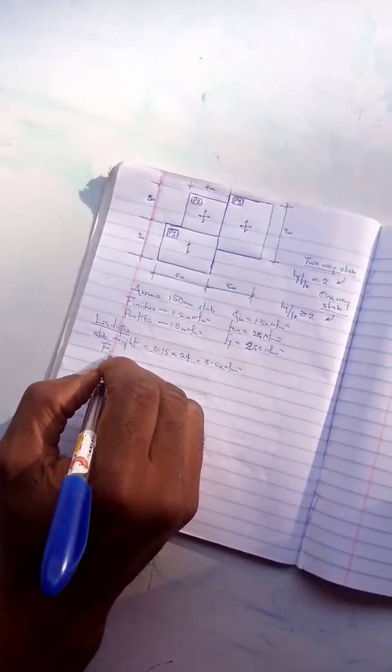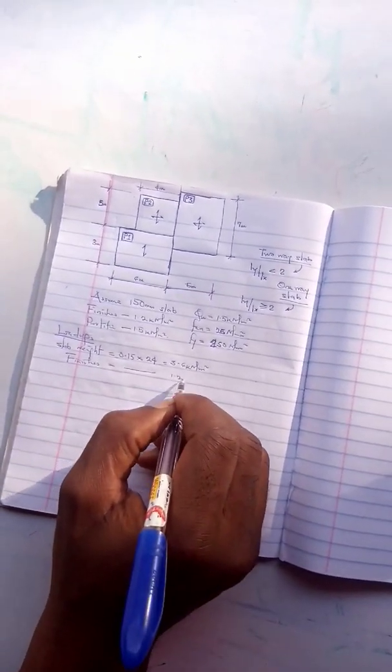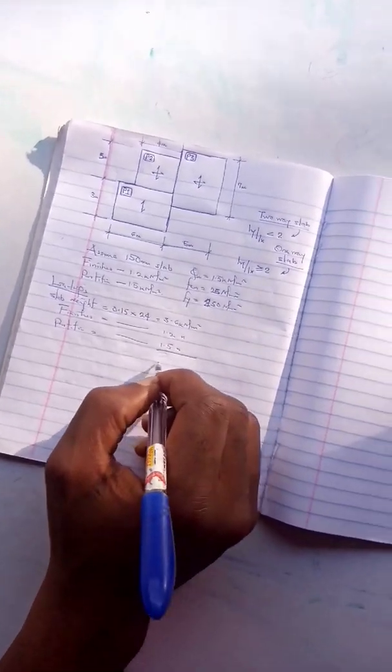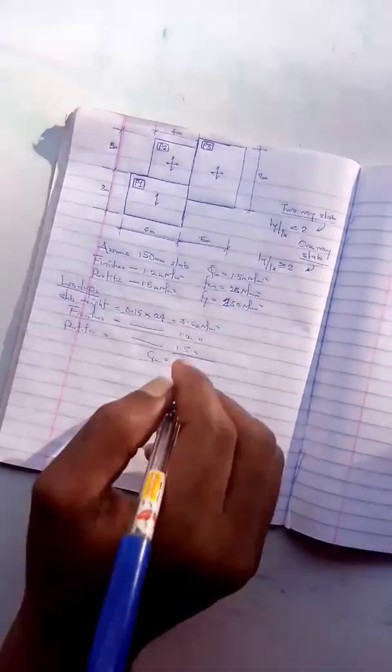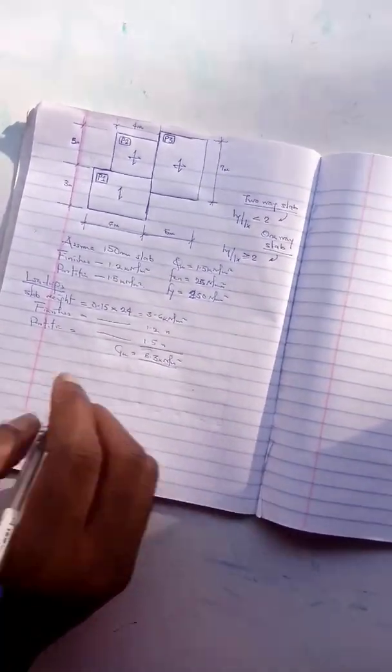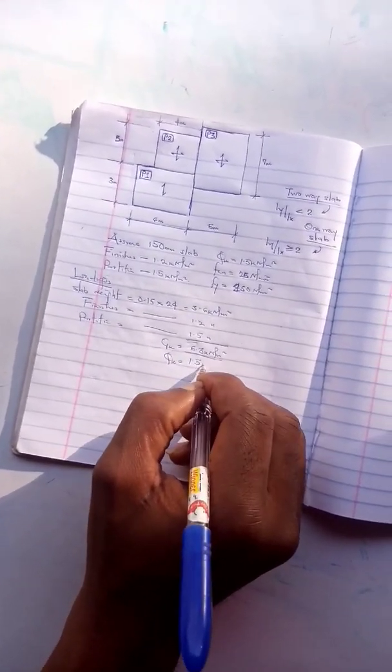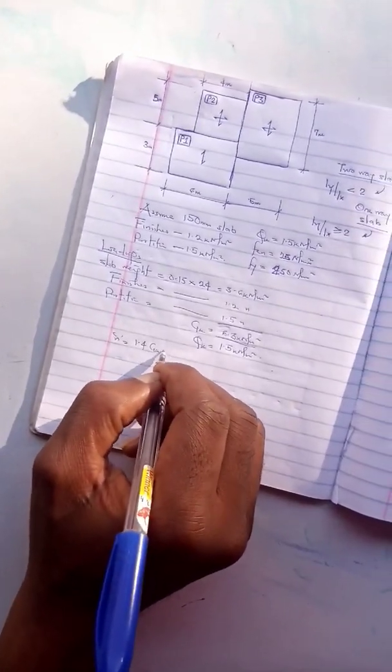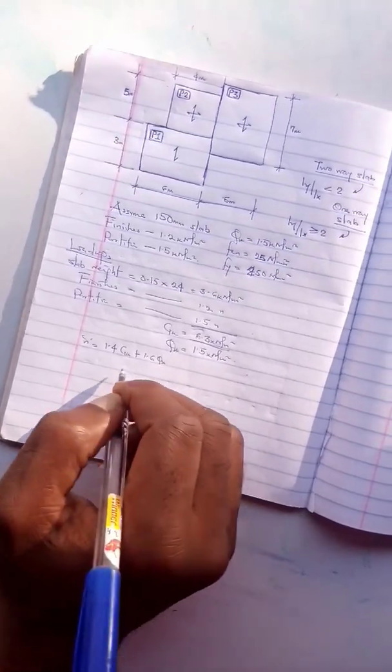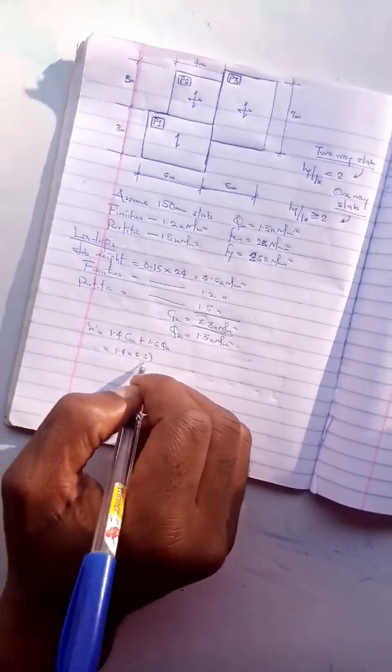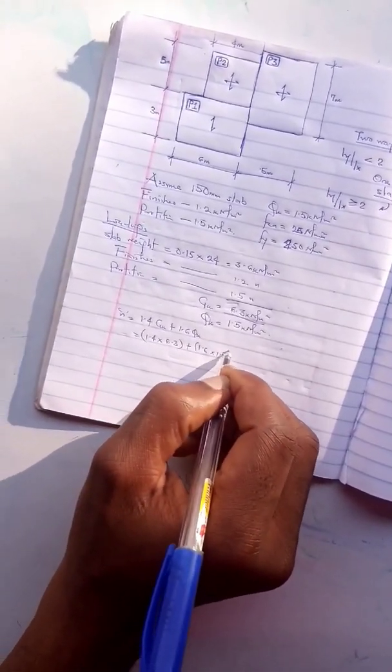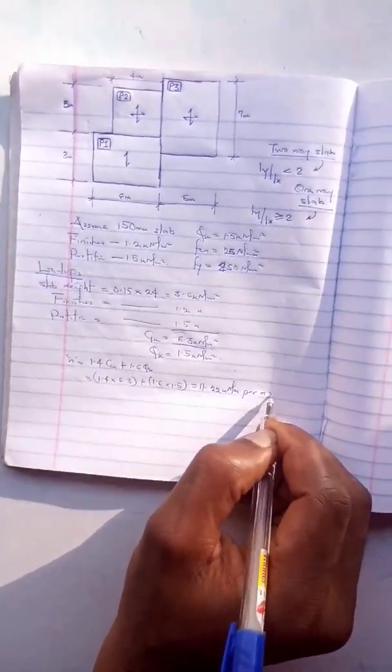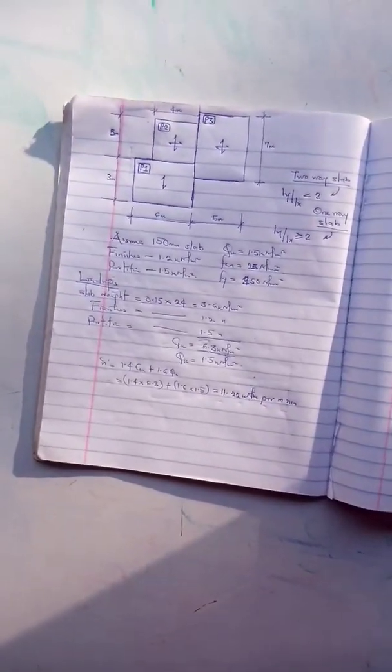We have for the finishes as given 1.2, then partition 1.5. The addition of the dead load, these three constitute the dead load on the slab, is 6.3 kilonewton per meter square. We have live load 1.5 kilonewton per meter square. To get the ultimate design load we have 1.4Gk plus 1.6Qk, so 1.4 multiplied by 6.3 plus 1.6 multiplied by 1.5. This gives 11.22 kilonewton per meter run. We design our slab per meter run, so that is why we have our unit that way.